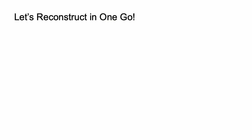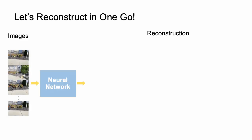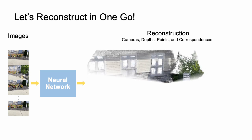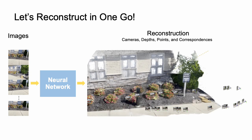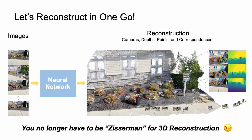So we should build a framework to reconstruct in one go. Given a set of images, we want to use a neural network — just a neural network — to recover the 3D point cloud along with the corresponding camera parameters, per-pixel depth, and 2D correspondences. Basically, we hope people don't have to be experts to conduct 3D reconstruction.